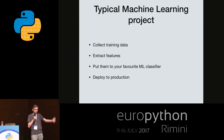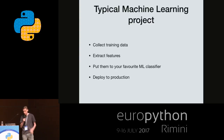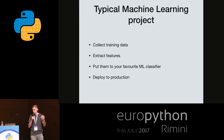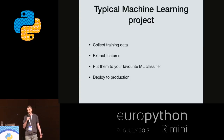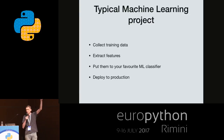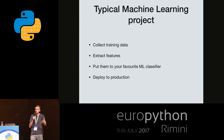So, a typical machine learning project: you collect some training data, then you extract features from it, then you put it all to your favorite classifier, and then you put it to production. What's missing? There are a lot of things missing.